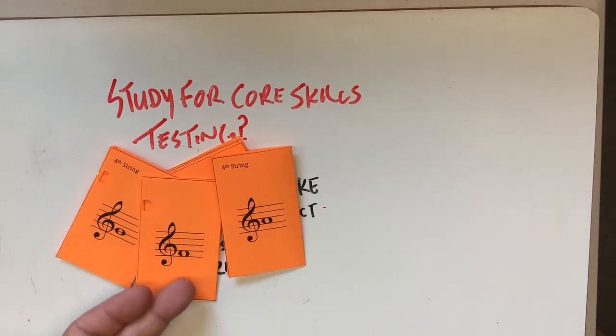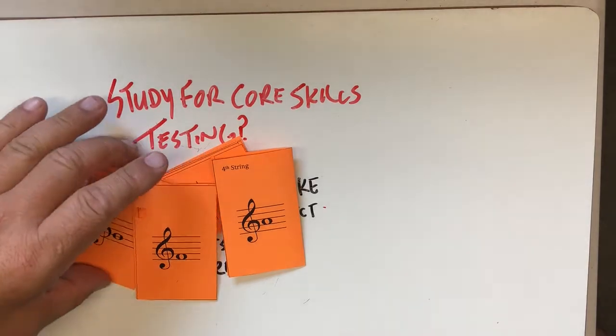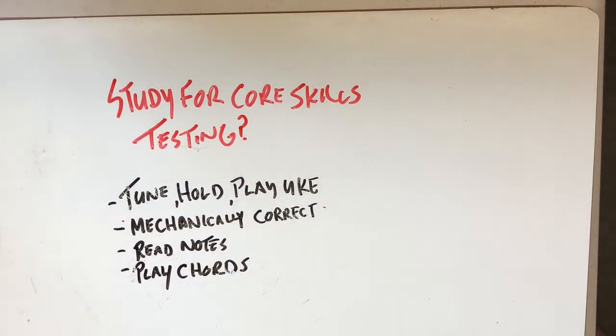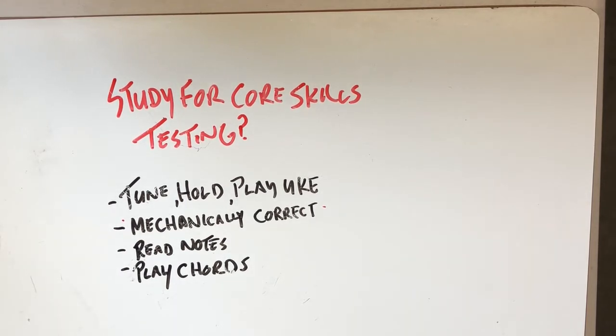And say, 'What's that note?' and you'll say 'F,' and then you'll play it. And I'll say, 'What's this note?' and you'll say 'G,' and I'll say, 'Find it on the fourth string,' and you'll just play them. And then finally, I will make you play the F, C, and G chord, just a few measures of each in time.